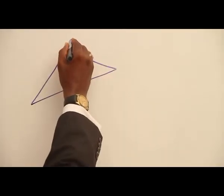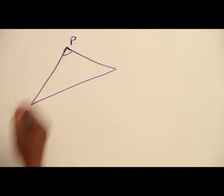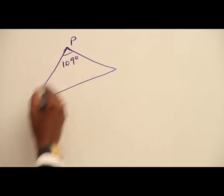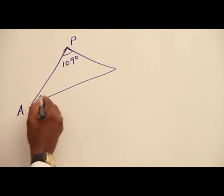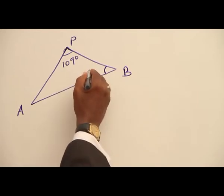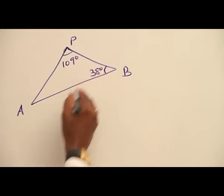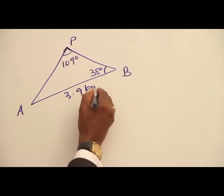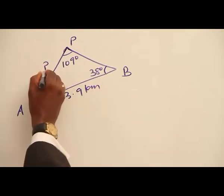Here this is our P and the whole of this angle is 109 degrees. This is our A, this is our B, and the whole of this angle is now 38 degrees. The distance here is 3.9 kilometers. We are required to find AP.